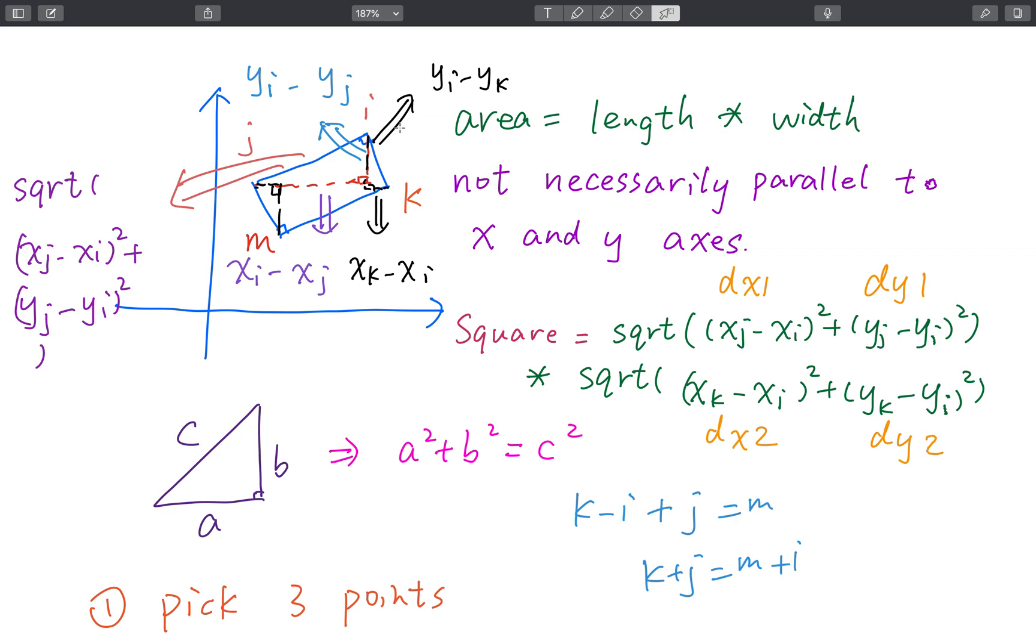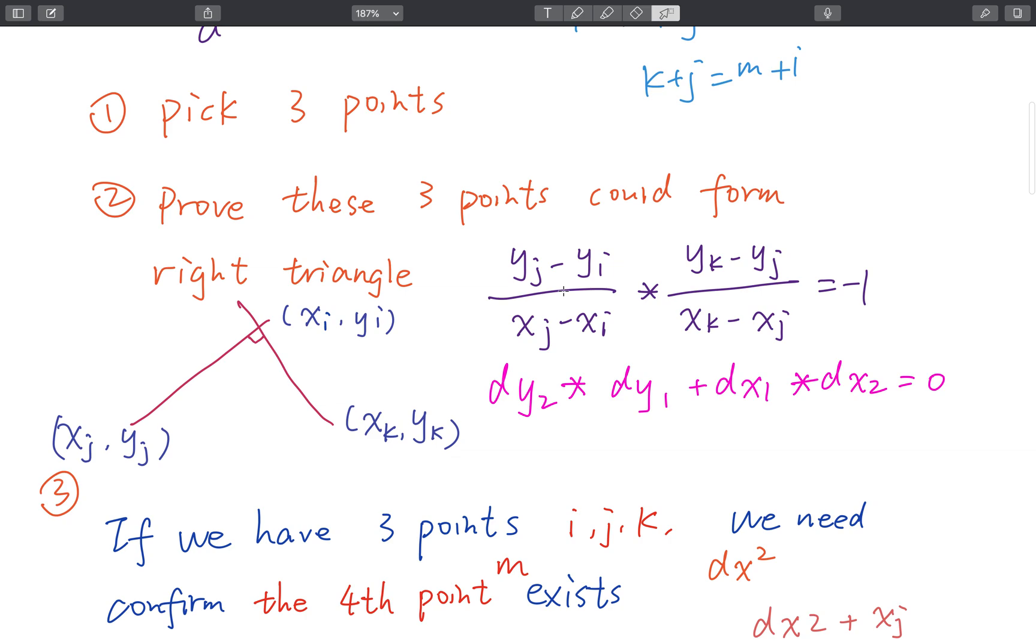That means slope IJ times slope IK should be negative 1. So we get YJ minus YI divided XJ minus XI times YK minus YJ over XK minus XI - oh sorry, this should be I. And it is equal to negative 1. And we times these two parts on both sides, then we move this part to left.